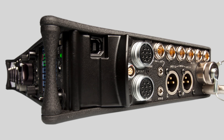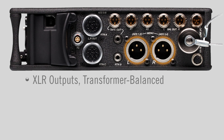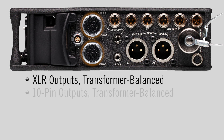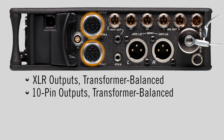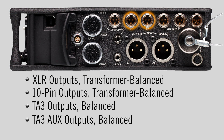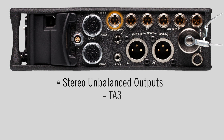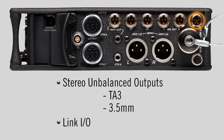While the 664 has extensive input capability with its 6 inputs, it also has extensive output flexibility. Output connectors consist of two transformer balanced XLR outputs, two 10-pin Hirose transformer balanced outputs, two balanced TA3, two additional balanced TA3 for aux outs, and two stereo unbalanced outputs on TA3 and 3.5mm connectors. A link I/O port is also available for linking multiple mixers.